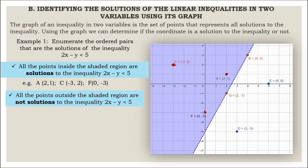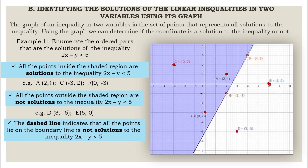All the points outside the shaded region are not solutions to the inequality 2x minus y is less than 5. Examples: Point D and Point E. The dashed line indicates that all the points lying on the boundary line are not solutions to the inequality 2x minus y is less than 5. Examples: Point B and Point G.